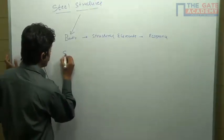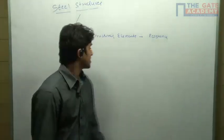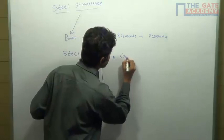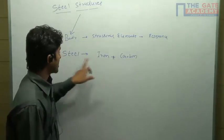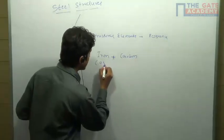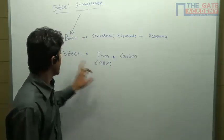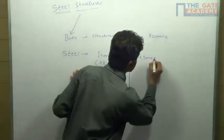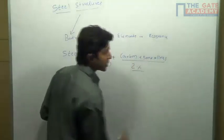So now, what does steel consist of? Steel is composed of mainly two factors: one is iron and one more is carbon. Majority of the portion of the steel is iron, that is around 98 percent. Carbon plus some alloys together will constitute two percent.